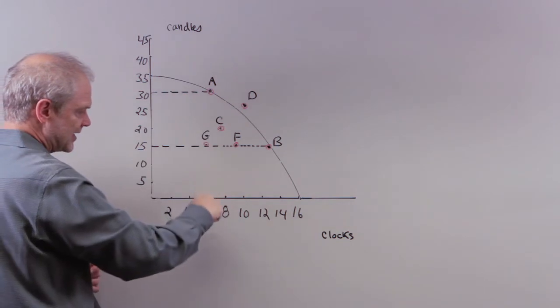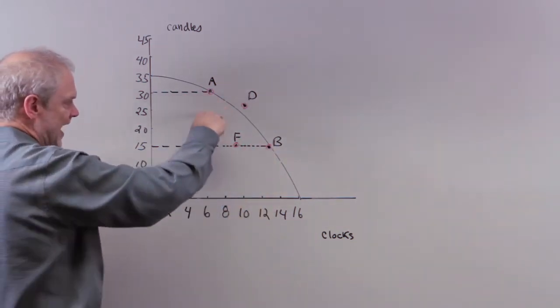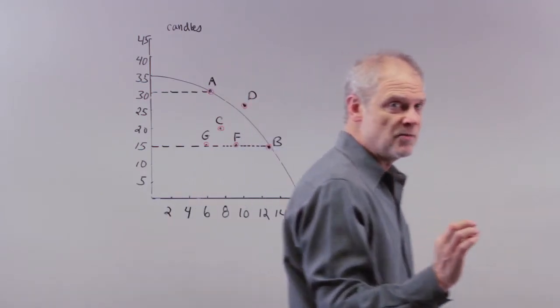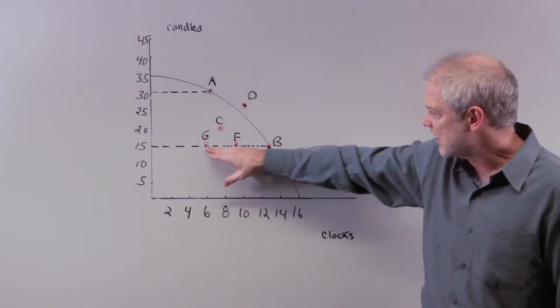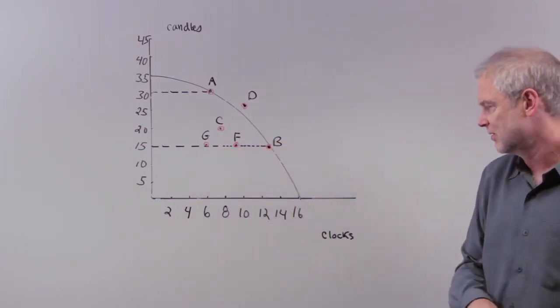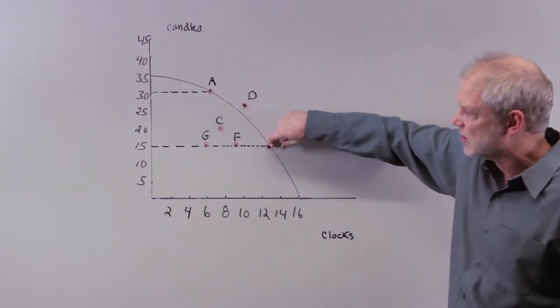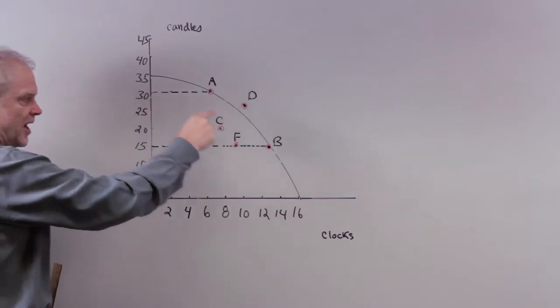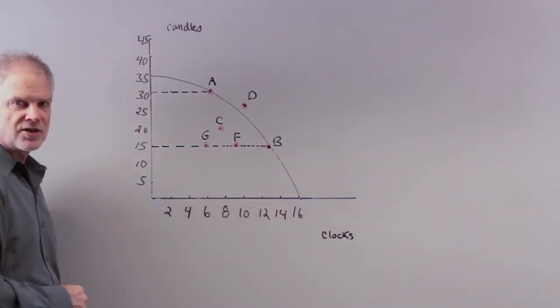Well, if you go from A to B, you cut back on these many candles in order to get this much additional clocks. How much is that? That's point 30 and 6, and we're going to go from 6 to 14. So, when you go from A to B, we give up 30 minus 15. We give up 15 candles when you move from point A to point B. What do you gain from it? You gain 6 out to 14. You're going to gain 8 additional clocks.